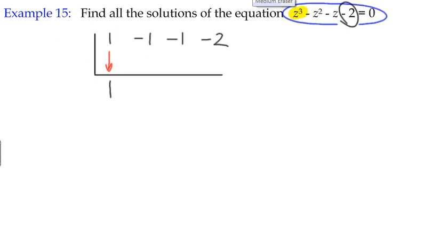And if I try negative 1, then I'll have a negative 1 here, add those two together, I get negative 2. Multiplied by negative 1 gives me positive 2. Add those together to give me 1, multiply those two together to give me negative 1, that's no good.